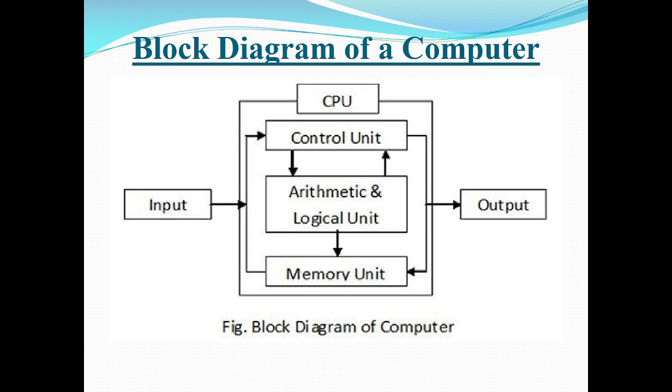When you look at the block diagram of a computer, on the left-hand side there is an input box, in the middle there is the CPU, the central processing unit, and on the right-hand side there is an output device. Within the CPU, there are three components: control unit, arithmetic and logic unit, and memory unit. Input devices are connected to the CPU, processing takes place in the CPU, and then the output is given to the output devices.